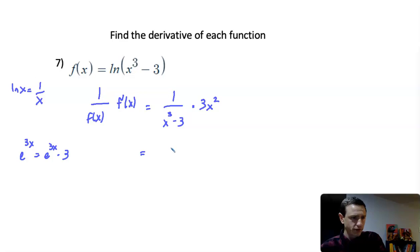So it doesn't look like any sort of simplifications can be made. I have 3x squared over x to the third minus 3, and that's it. And if you're like, oh wait, what about x to the second and x to the third, why aren't those canceling?